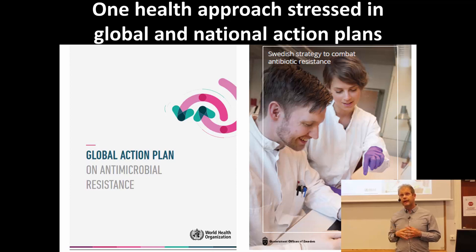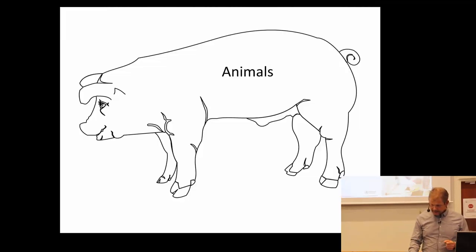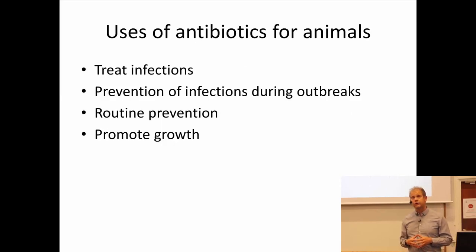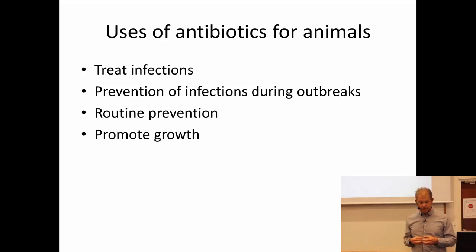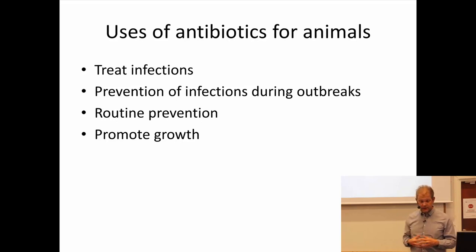I'll start by talking about animals, and then we'll move into the environment part. We use antibiotics in animals quite a lot and for different reasons. We use it obviously to treat infections, pretty much the same way as we do with ourselves. This can have economical value if we talk about farming animals, but also emotional value — such as treating pet animals. Both types are important to treat so that they don't suffer.